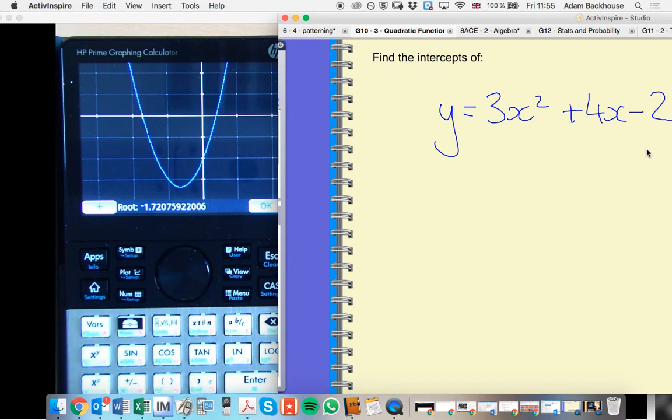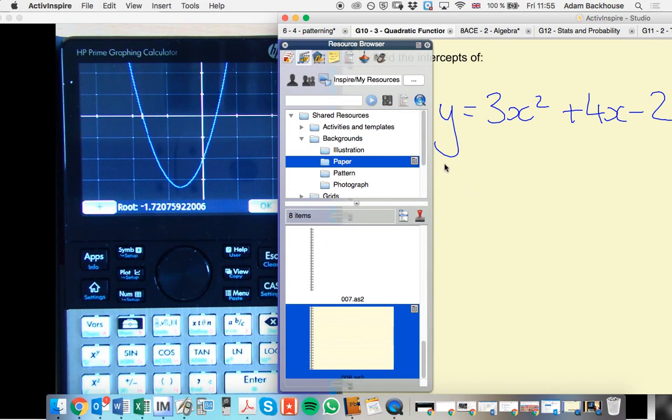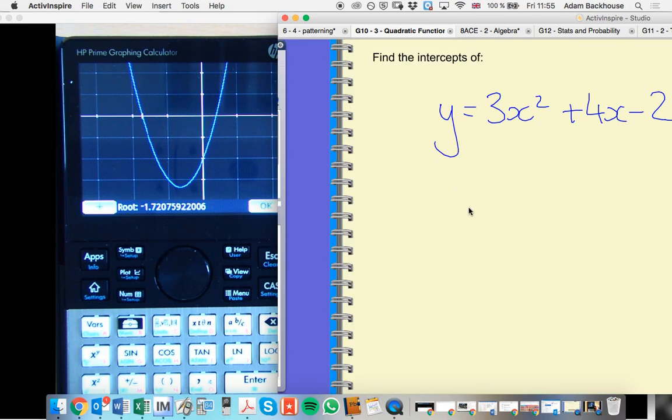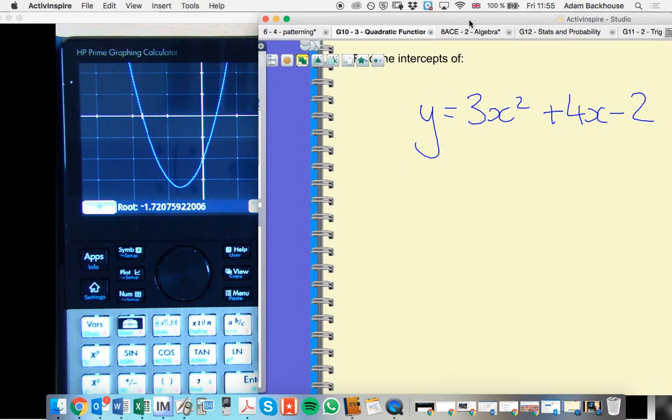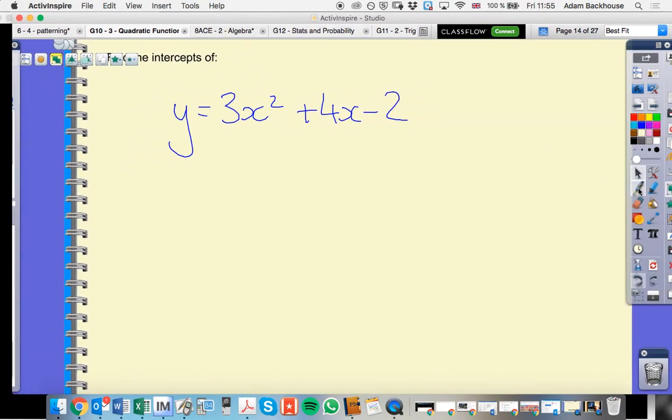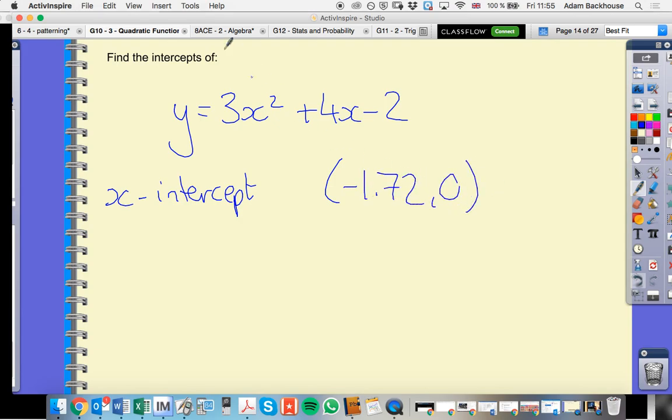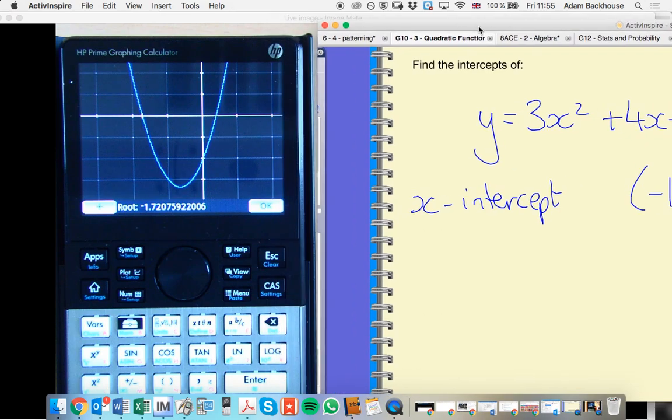So there we go. We've got a value. So I'm going to add that here. So x-intercept, we've got negative 1.720, and then we need to go and find the other.